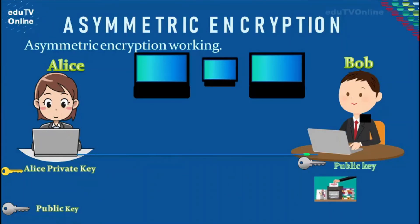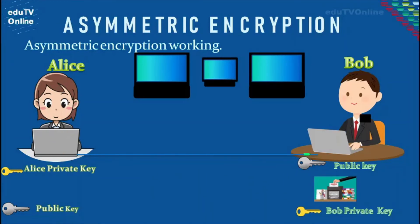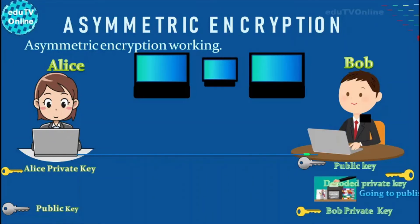Now, Bob decrypts the symmetric key by applying his own private key. The decoded private key is then used to decrypt the message sent by Alice.